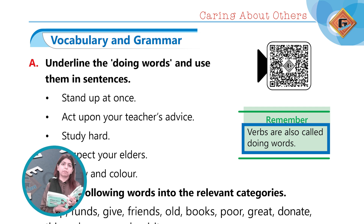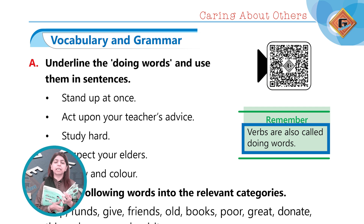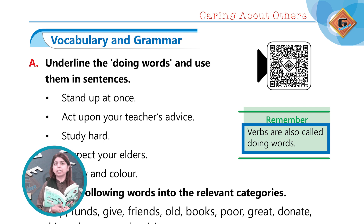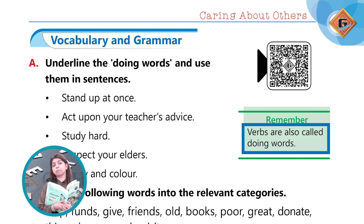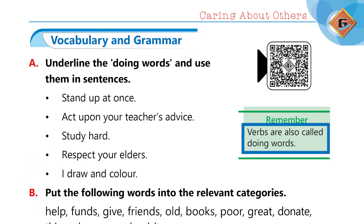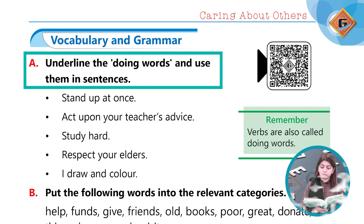For example: stand up, sit down, drinking, sitting, clapping, tapping — these are all doing words. So if you have any word where you have to show your action or your work, it is called a doing word, which we also call a verb in simple words, and we use them in sentences.